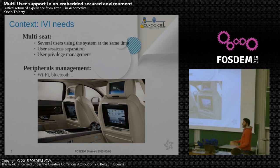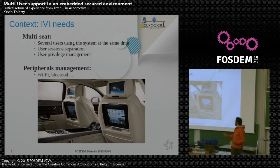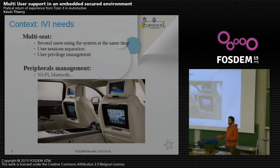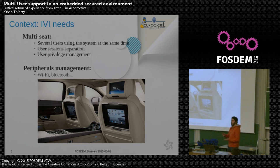The main need for IVI is multi-seat. By multi-seat we mean we need several users using the system at the same time — one user on one seat with one user session. What we want is user session separation; we don't want a user to interfere with another user's content and applications. We need to manage privileges, with more privilege to control and configure main resources, and we need to manage peripherals like Wi-Fi, Bluetooth, and USB ports.